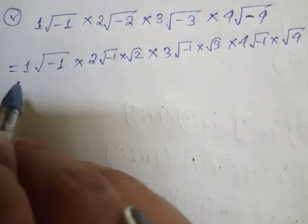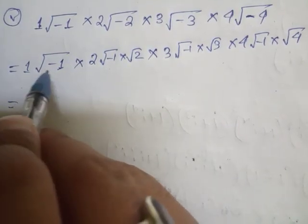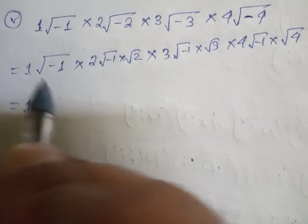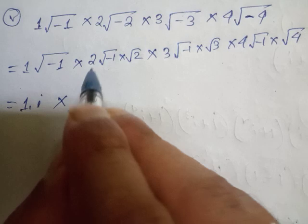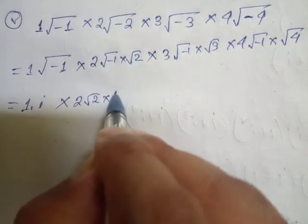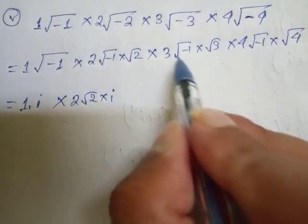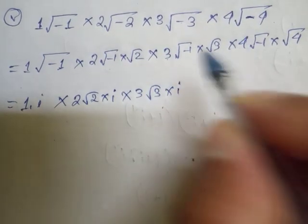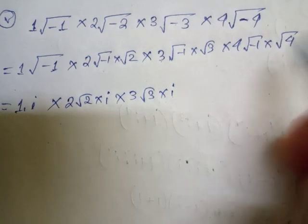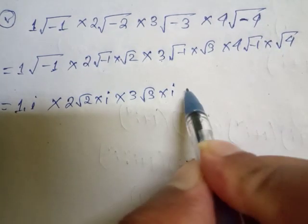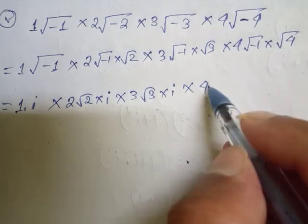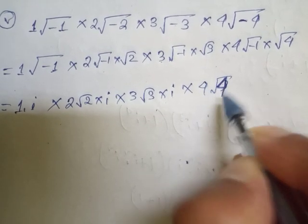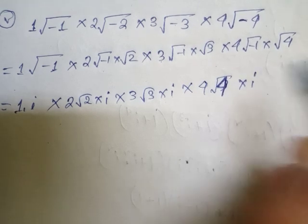Now look here students: 1 and root over minus 1 is i, meaning 1 into i. There is 2 root 2 into i — i means root over minus 1. Then 3 root 3 into i, meaning root over minus 1. And 4 root 4 into i. Now root 4 means 2, so 4 into root 4 gives 4 into 2, which is 8 into i.